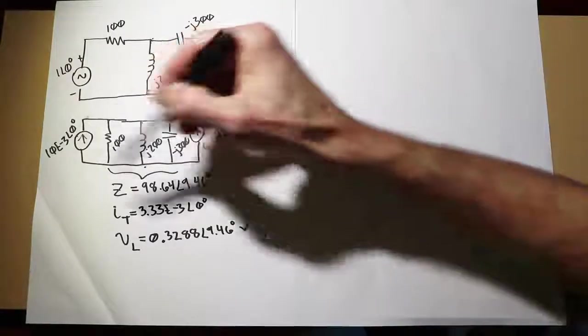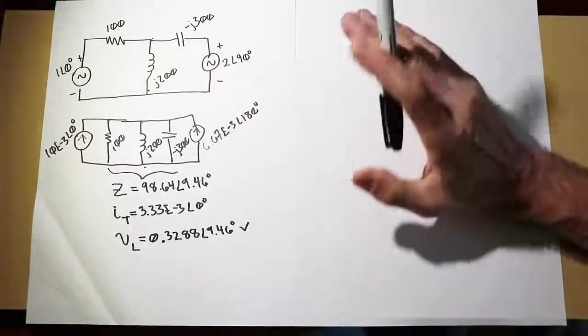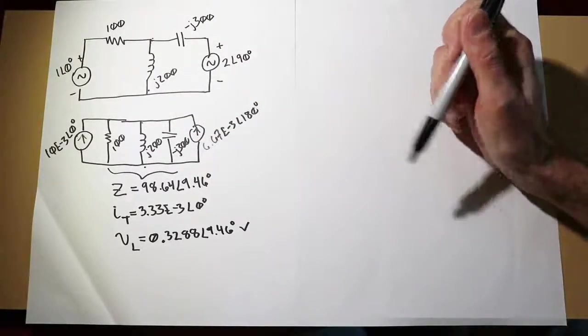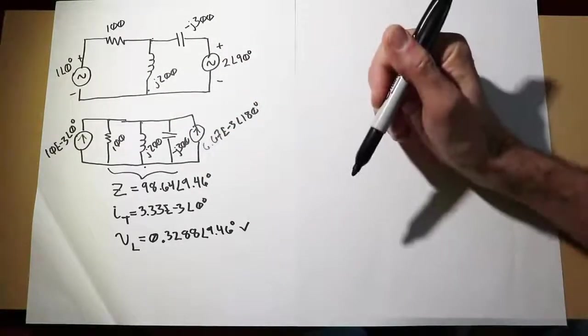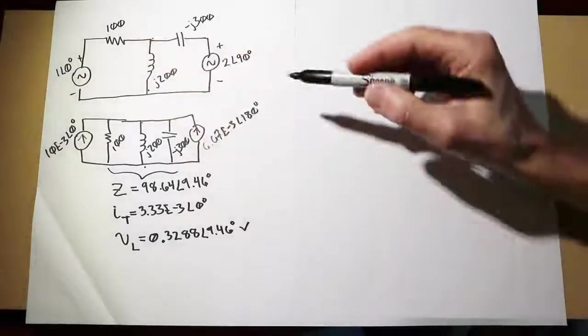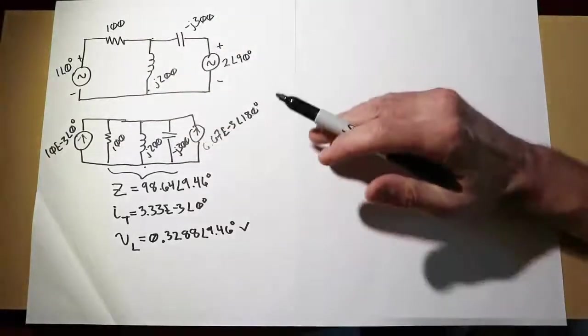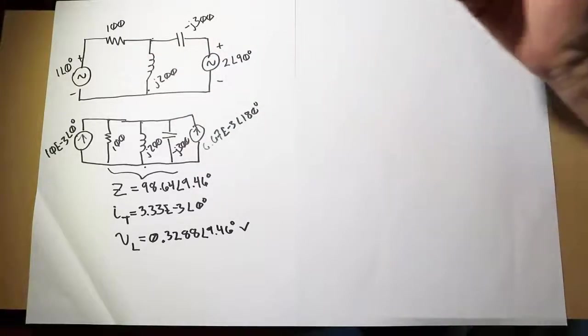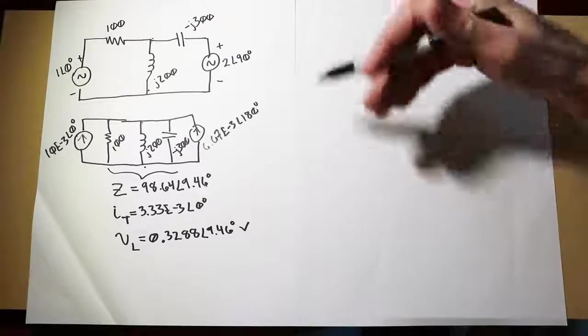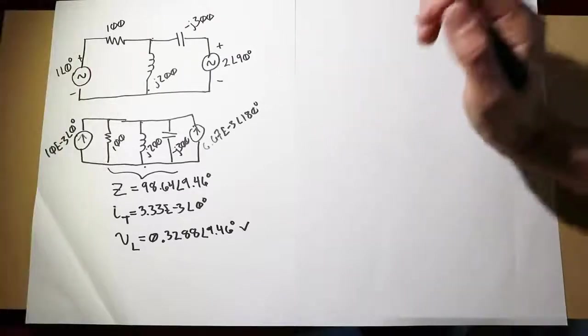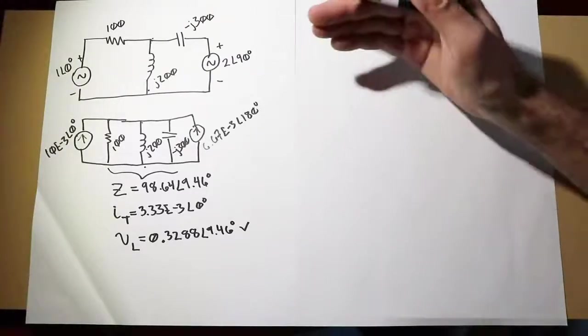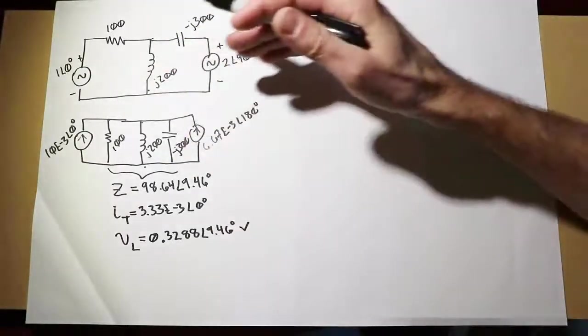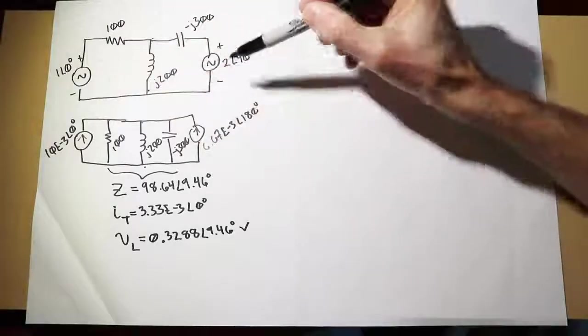The problem here is this technique will not work on all circuits. There are a great number of circuits where simply doing a source conversion is not going to help you. In superposition, the idea is that each source can be treated by itself. We'll find the contribution of that source to a particular current or voltage, find the contribution of the second source, third source, and so forth, and then combine them together, being cognizant of the current directions and the voltage polarities. We will generate as many circuits as we have sources.